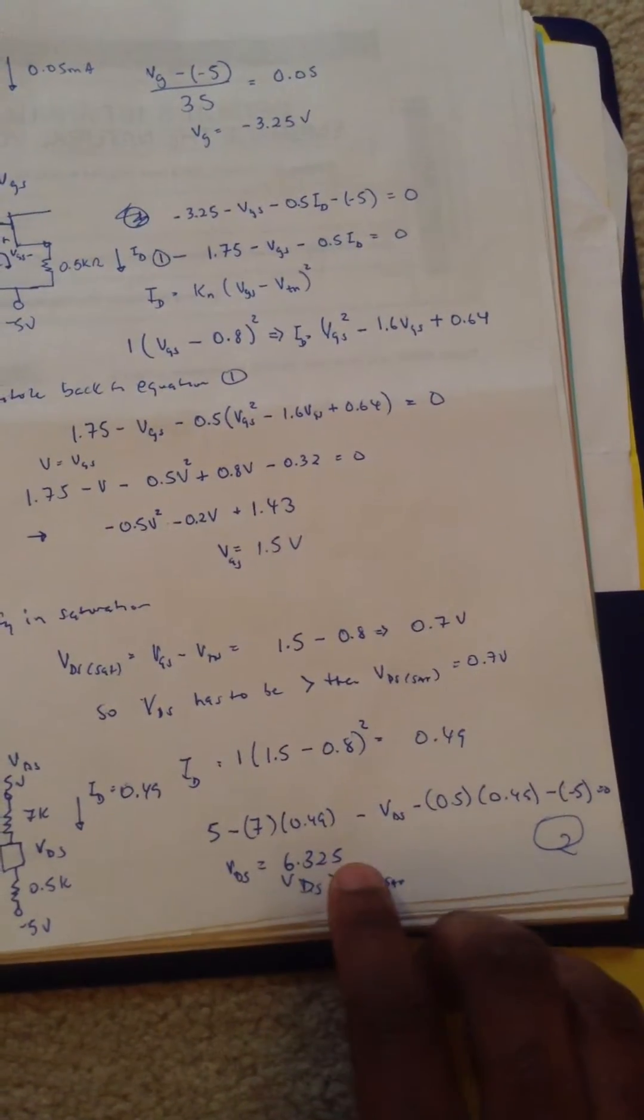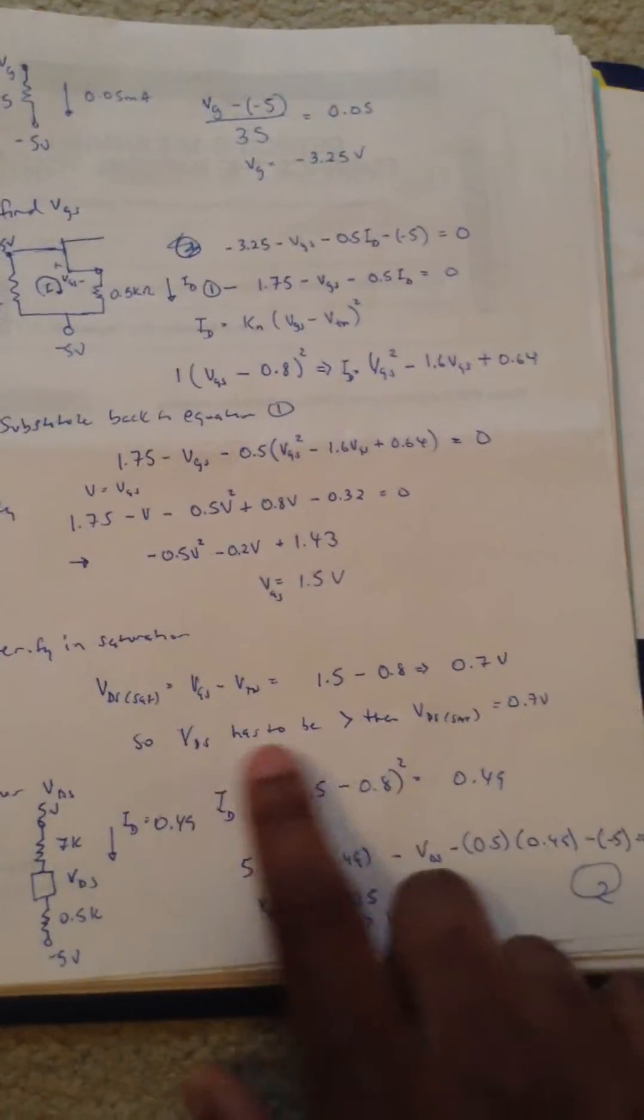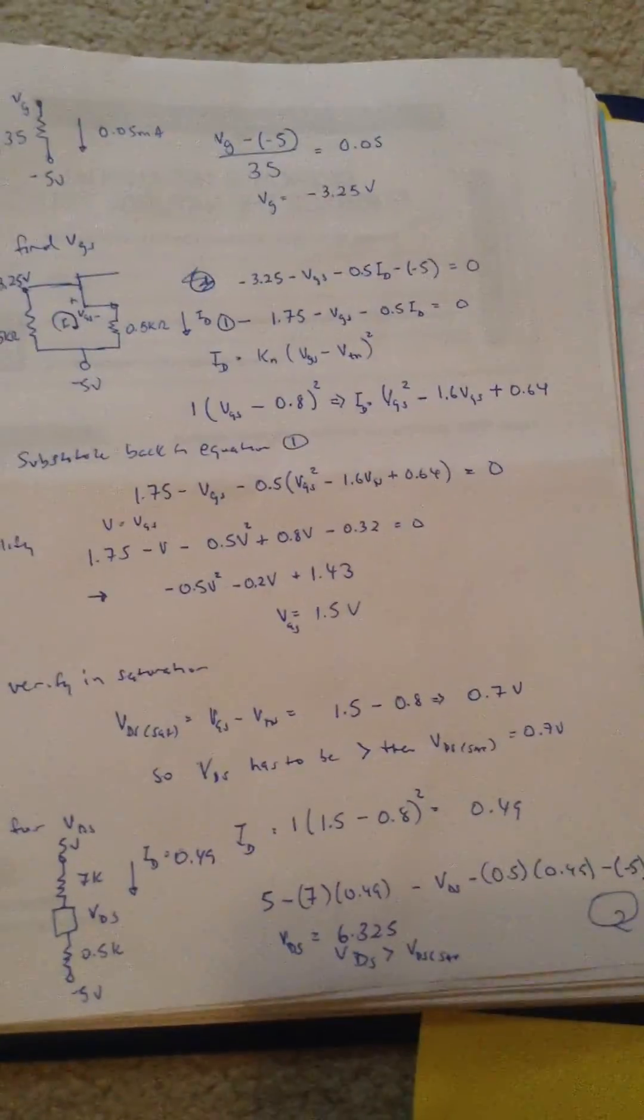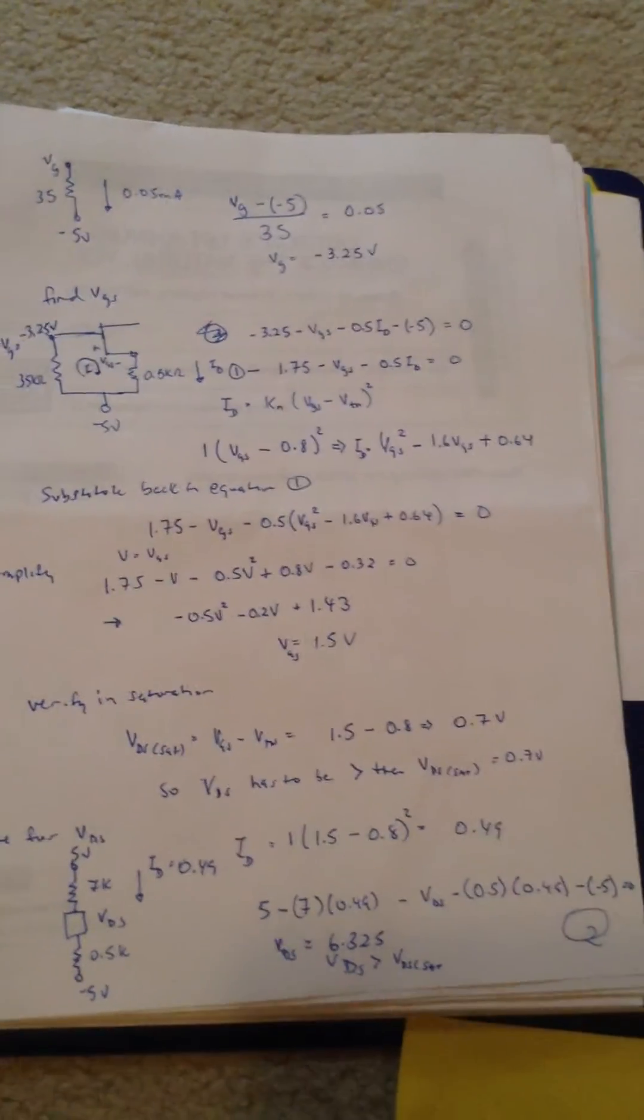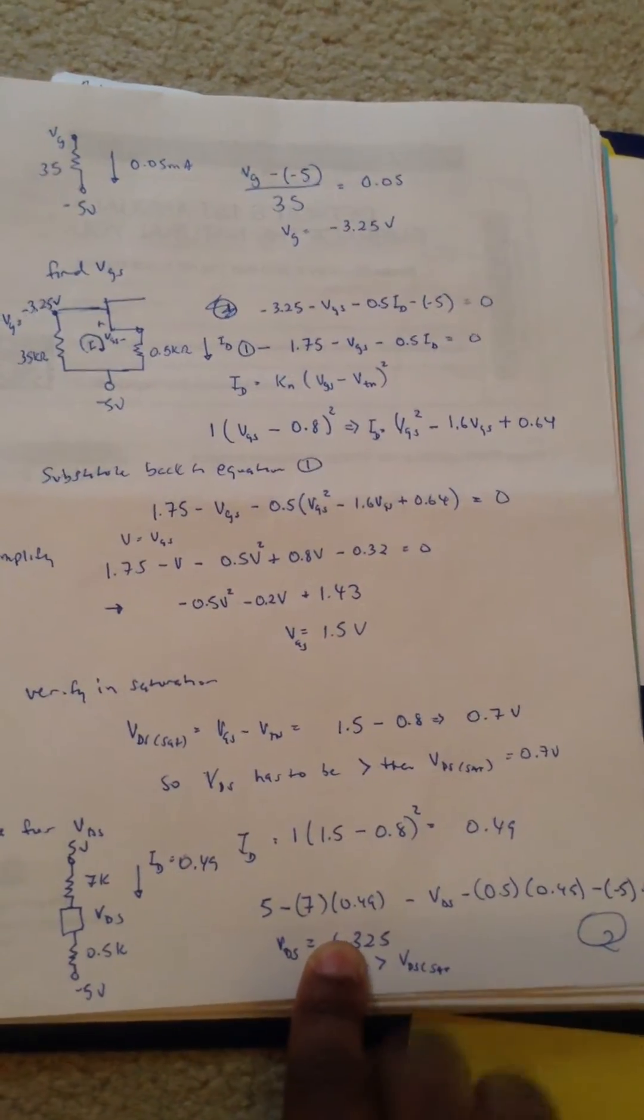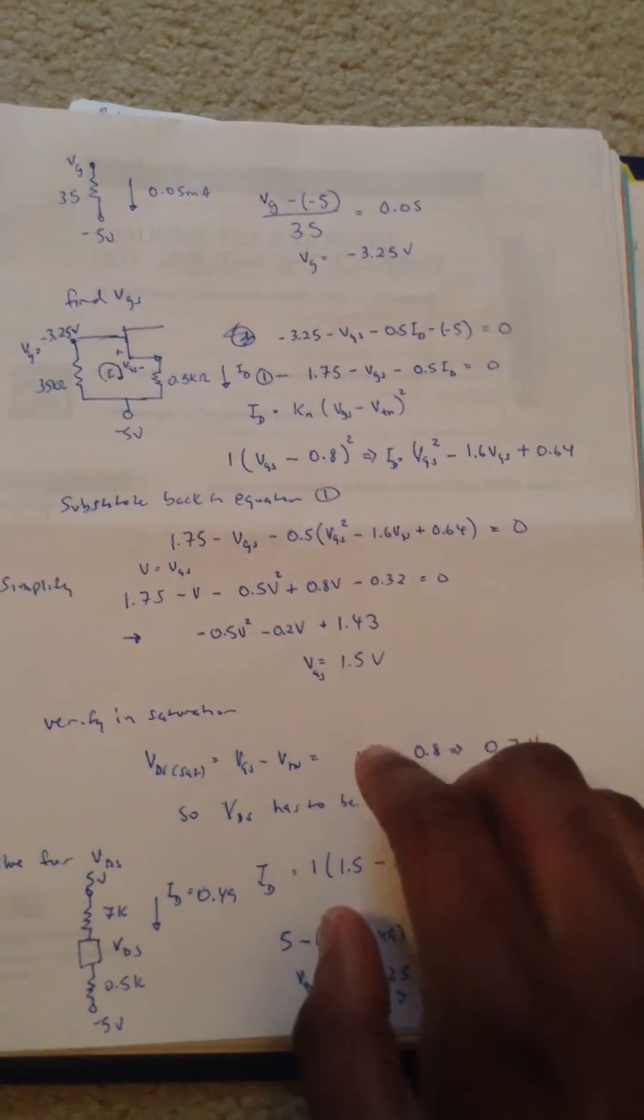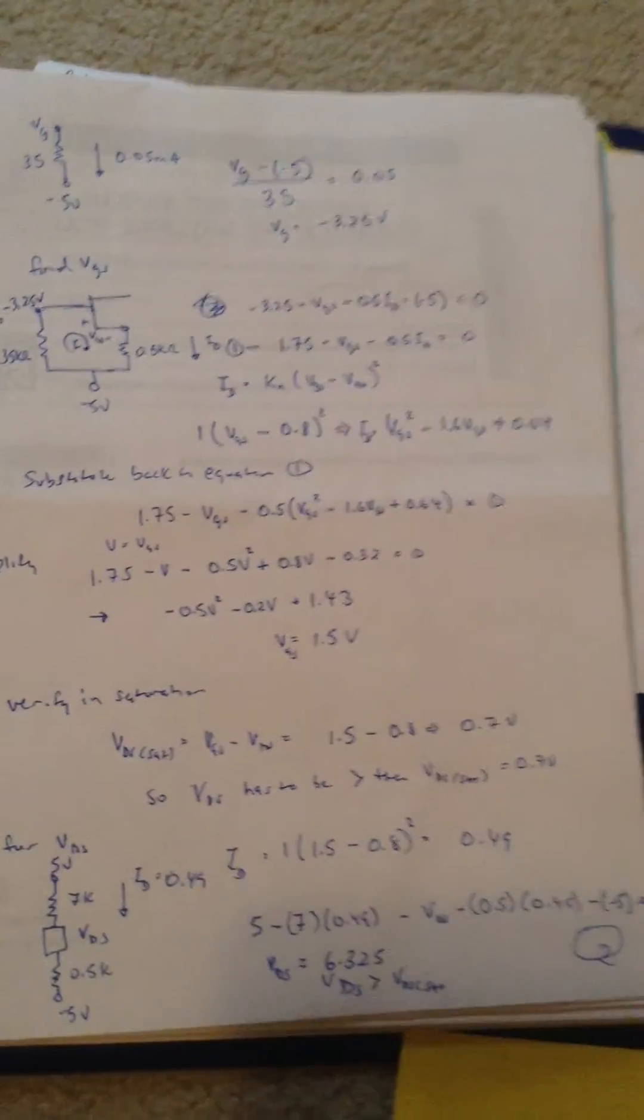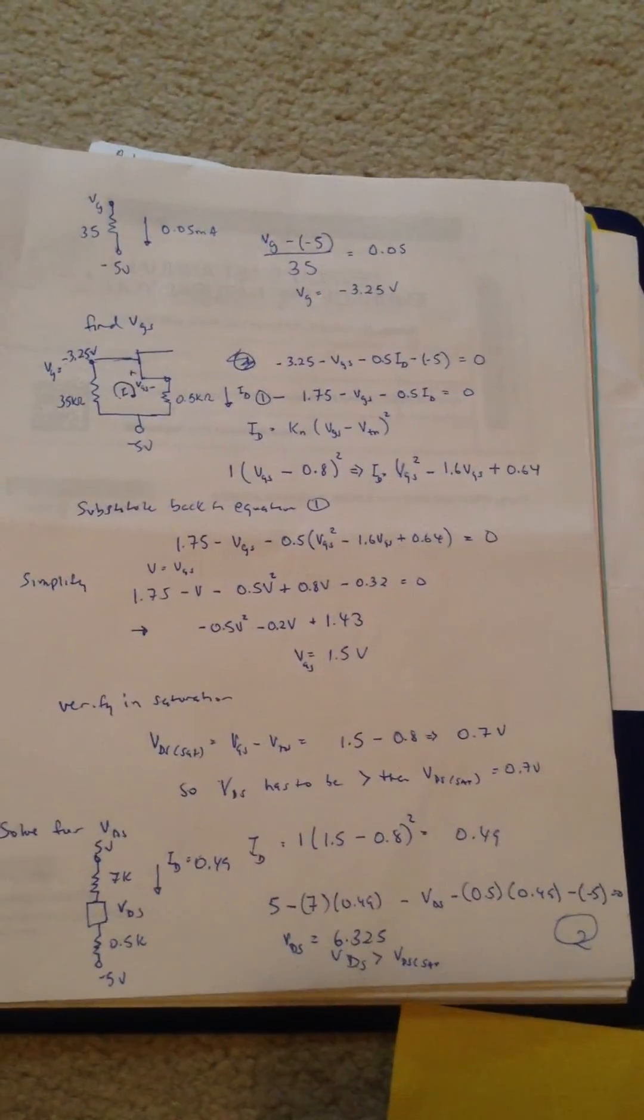we get 6.325, which is greater than the saturation voltage we solved for. So our assumption that this was in saturation is correct, and these are your values. We have VDS, that's 6.325, and the drain current was 0.49. And the second part I'll do later, which is solving for the AC small signal gain.